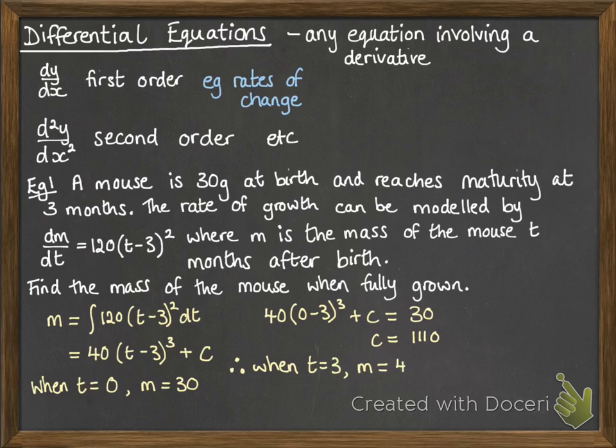So then working out when t is 3, since we're told that it reaches its maturity at 3 months, so it's fully grown at 3 months, so we put in 3 for our time, and into that equation that we worked out before, so its fully grown mass will be 1,110 grams.